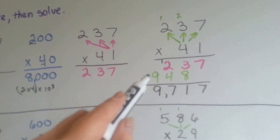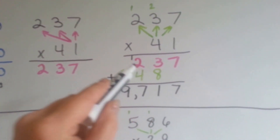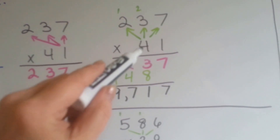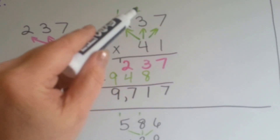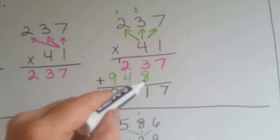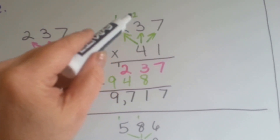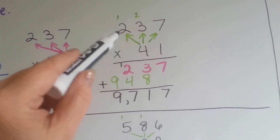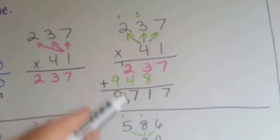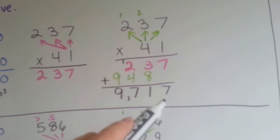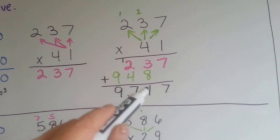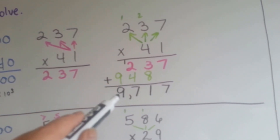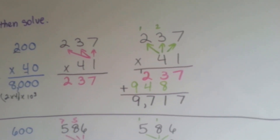Now it's the tens place turn. We have 237, and the 4 is going to take its turn going to ones, tens, and hundreds. 4 times 7 is 28 — we carry the 2 and put the 8 down in the tens place because we're multiplying tens. 4 times 3 is 12, plus 2 is 14. We carry the 1 and put the 4 down. Then 4 times 2 is 8, plus the 1 is 9. Now we add them all up: drop the 7, 8 and 3 is 11, carry over the 1, 1 and 2 and 4 is 7, drop the 9 — and we have 9,717.